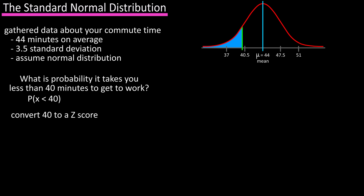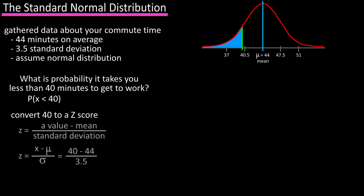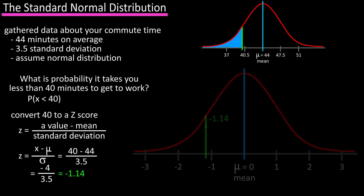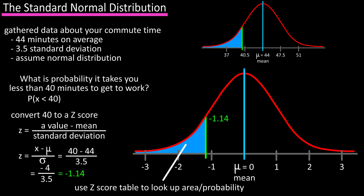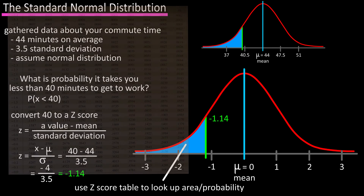First we're going to convert 40 — in this case our x value — into a z-score. Using the formula, we have z equals 40 minus 44, the mean, divided by 3.5, the standard deviation, which equals negative 1.14. Now we can graph this on the standard normal distribution curve like this, and with this z-score of negative 1.14, we can use a standard normal distribution z-score table to look up the area or probability.